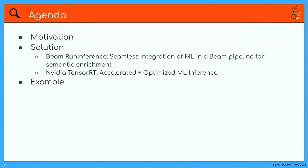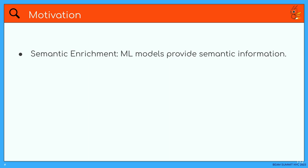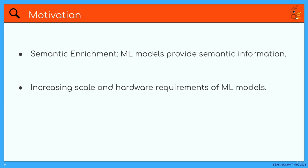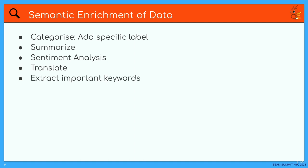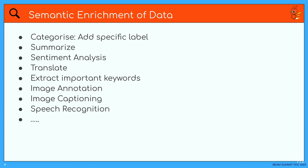The agenda for today covers the motivation behind this talk, then I'll walk you through the solution, and show an example pipeline. The motivation: why use machine learning? ML models are really good at providing semantic information, but models are becoming bigger and bigger, meaning cost is increasing and inference time is probably also increasing. So when you're running a pipeline, you want your ML models to run faster. Machine learning can do multiple tasks like categorization, summarization, sentiment analysis, translation, image annotation, image captioning, speech recognition, and more.